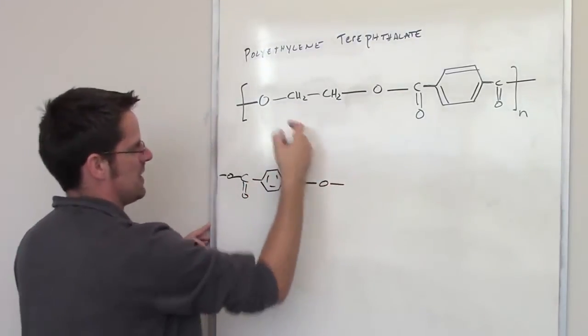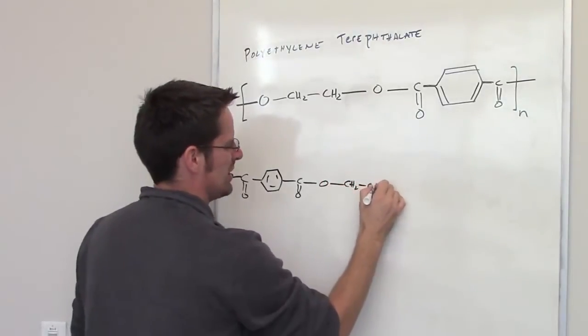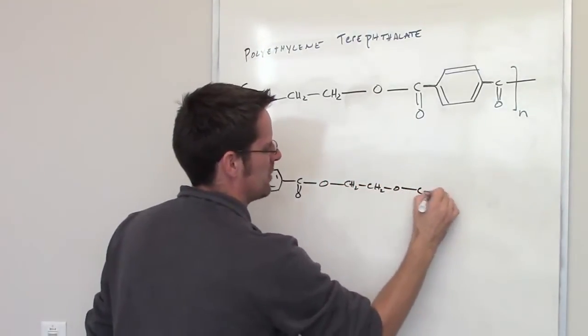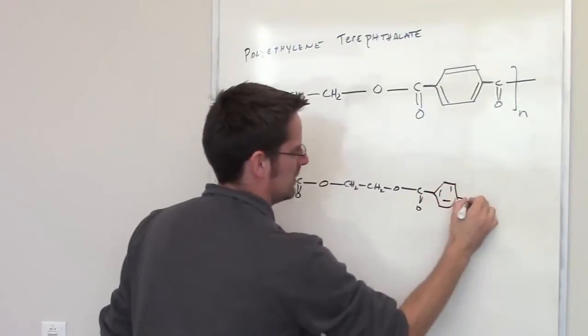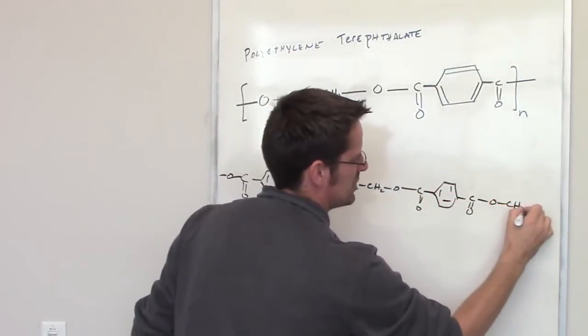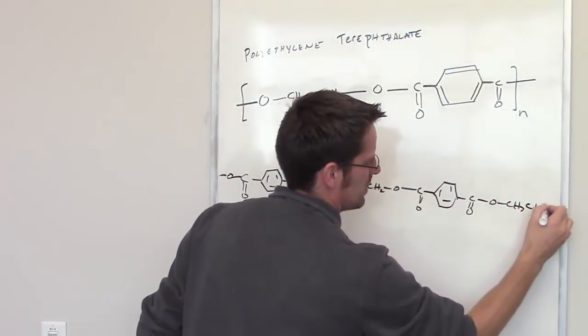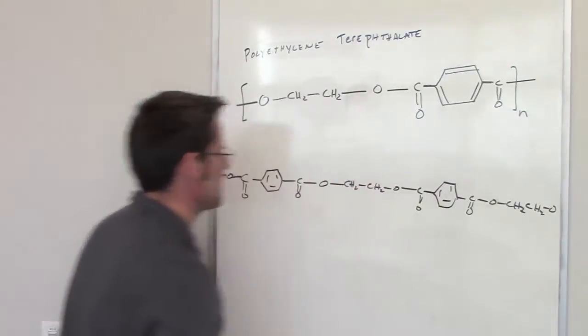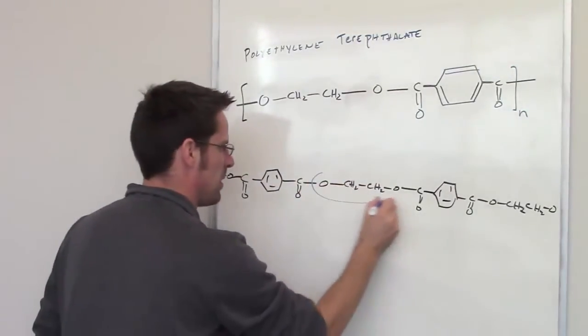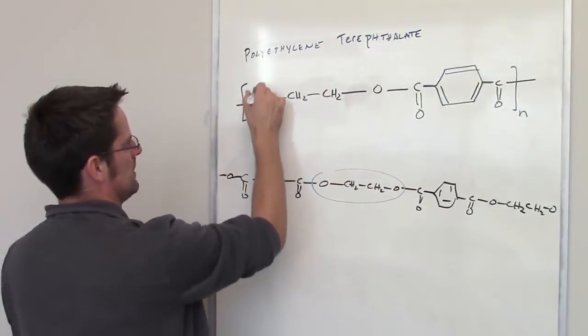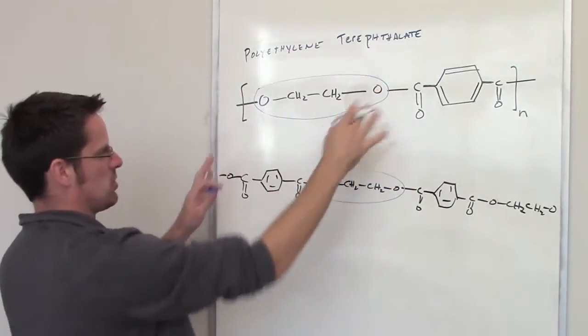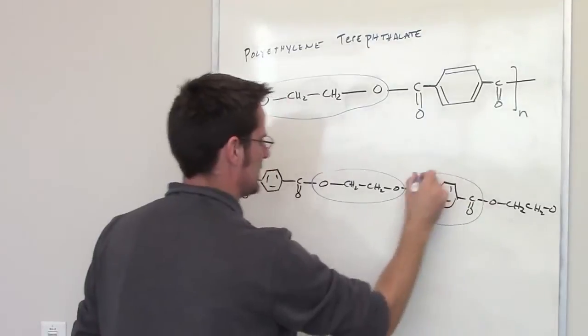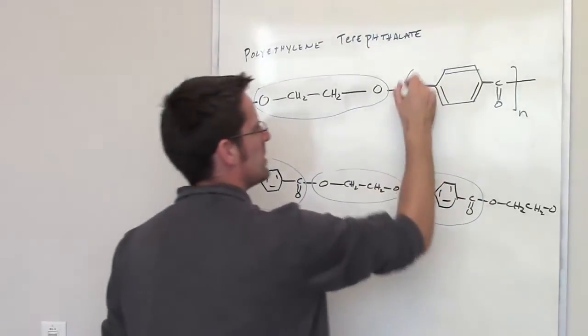Then I've got two CH2s stuck to oxygen, and then the pattern repeats. I've got my ring, now oxygen stuck to two CH2s, and then it goes on for potentially hundreds if not thousands of repeats. This section of the polymer is this section drawn up here, and these sections are this section.